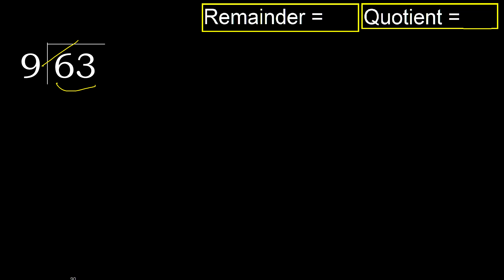But not greater than 9. Multiply by 8 — 72 is greater. Multiply by 7 — that is 63, which is not greater.